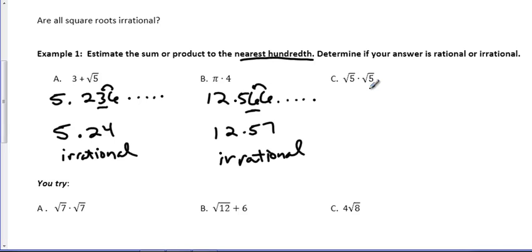Example C. We have the square root of 5 times the square root of 5. Plug that into your calculator. Pause the video if you need to. Pause it, plug that into your calculator, and see what you get. Were you surprised to see the number 5 come out? Obviously that's a rational number.